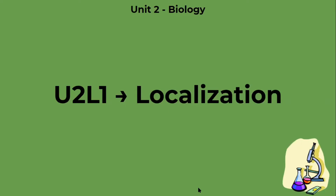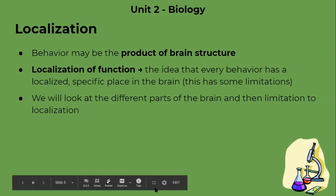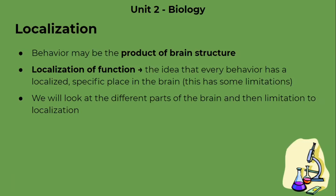Now let's get into lesson one of unit two: localization of brain functions. Localization is basically the notion that every behavior has a specific place in the brain that allows the origination of that behavior. This basically says that behavior may be a product of brain structure, so the locality of the brain structure will affect the behavior. There are some studies that do not support this notion, and we're going to look at the different parts of the brain and see the different limitations of that.